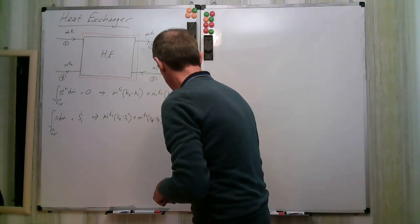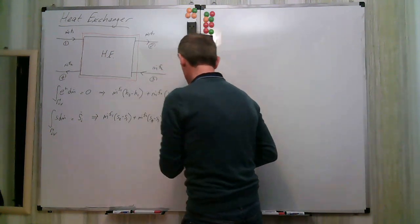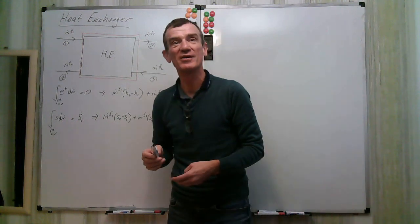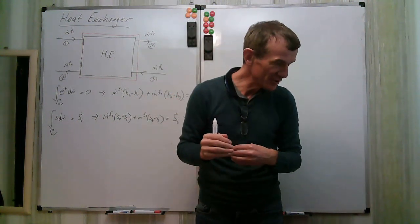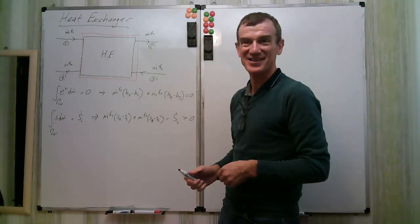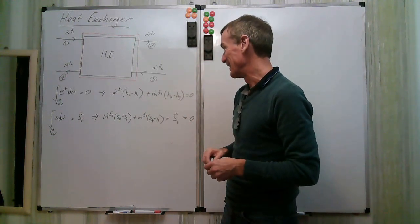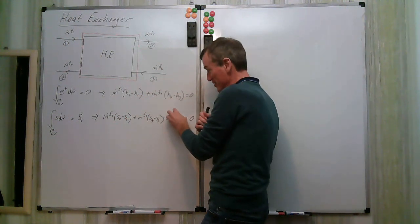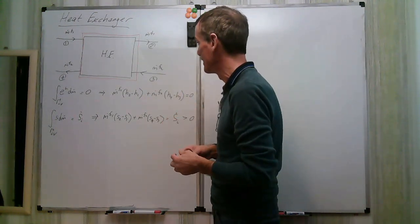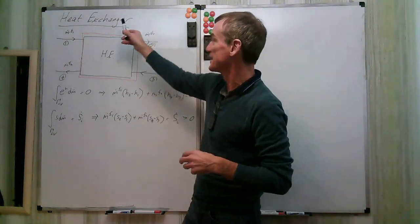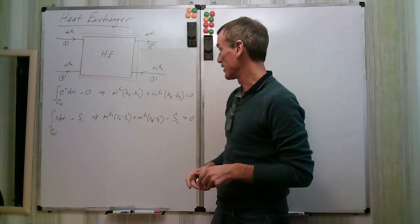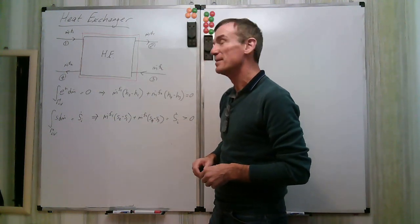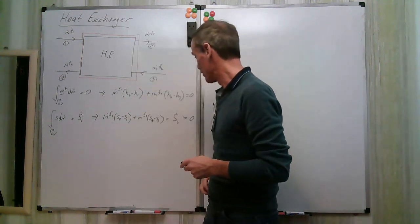Applying the steady flow entropy transport equation: m-dot-f1 times (s2 minus s1) plus m-dot-f2 times (s4 minus s3) equals S-i-dot, which is definitely positive. Unlike the turbine, compressor, and nozzle, we cannot set S-i-dot to zero here. Energy transfer occurs over a finite temperature gradient, so there is definitely irreversibility. To find the actual entropy values at exit, we need thermodynamic properties from tables.